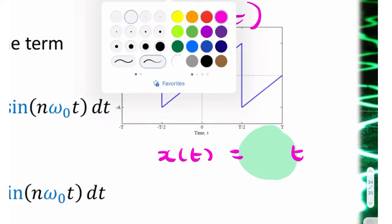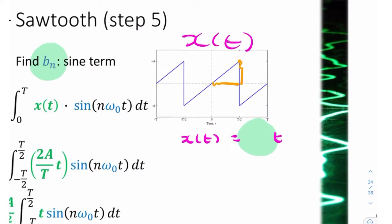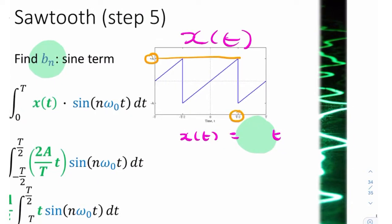To find the gradient, we would look at the rise divided by the run. Looking at this sketch here, we have an amplitude here of A, and here we have T over 2.